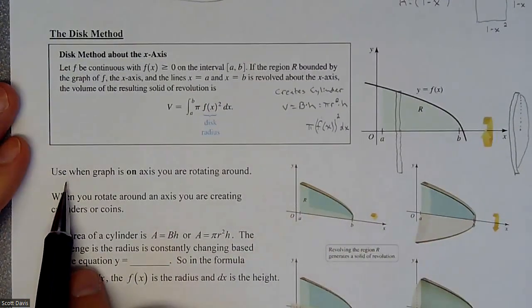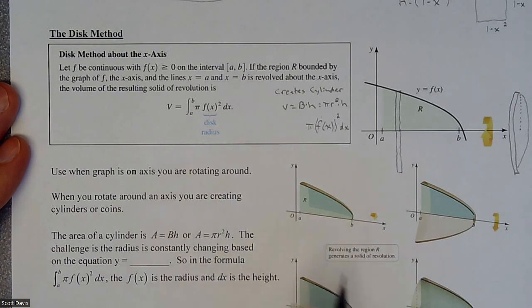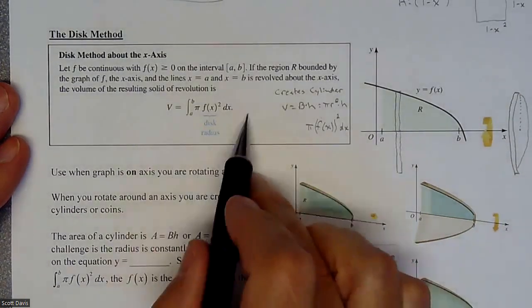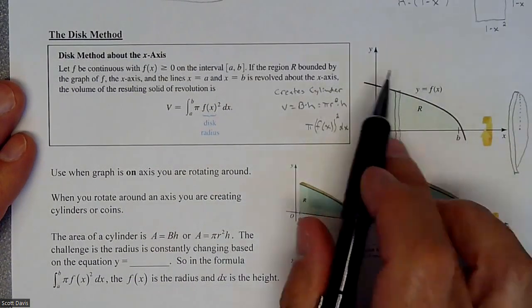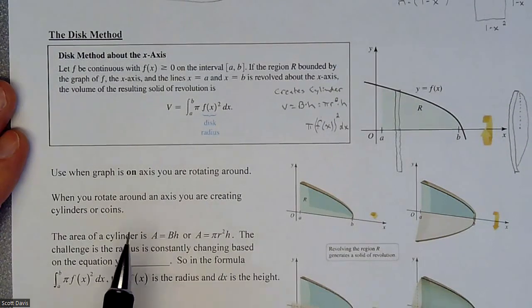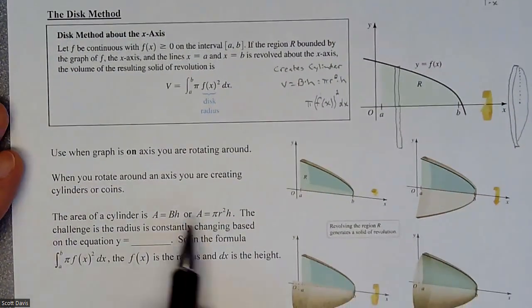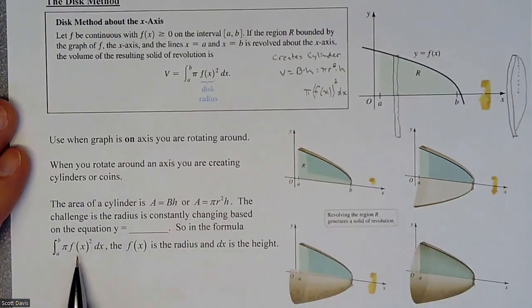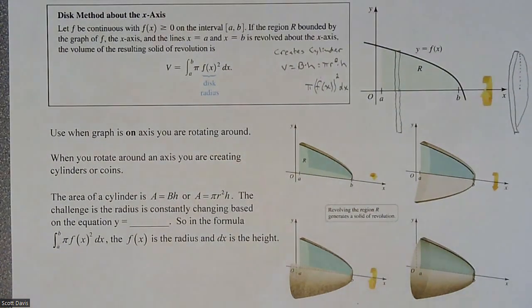When you use a graph on an axis that you're rotating around, this is what your formula is going to be. There's going to be a little bit of difference if you start to rotate it around a horizontal line and you have to shift things. This gets a little more complicated, but when you rotate around an axis, you are creating cylinders or coins, and here is your volume. Let's do an example on this.